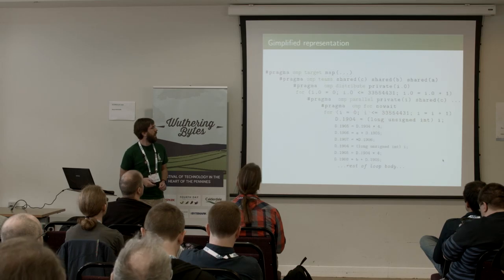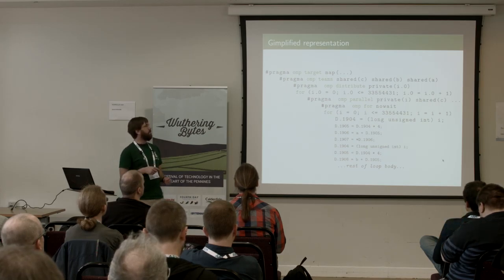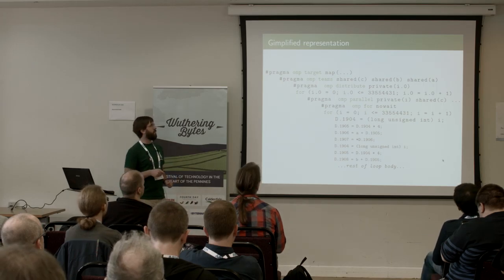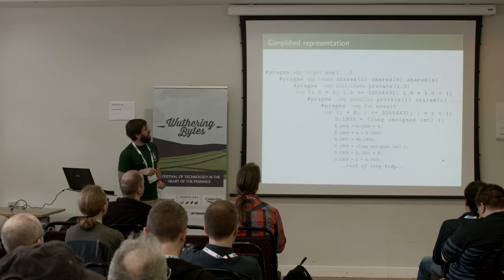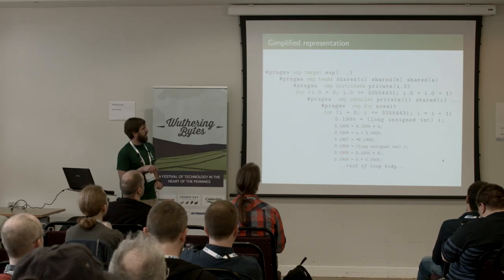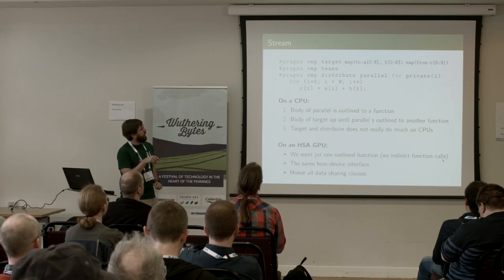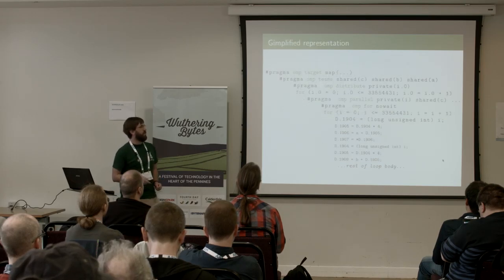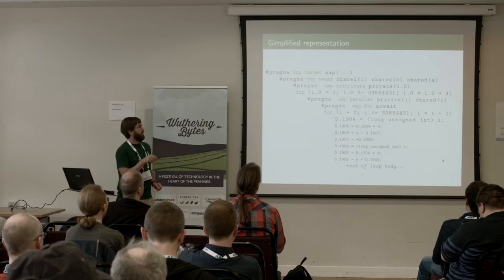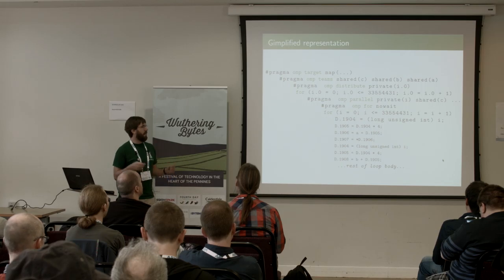We start with the Gimplified representation of that same loop, where all the different constructs are actually decoupled — we have a target construct, teams construct, and so on as Gimpl statements, then distribute, parallel for, and the body. Even though the original source code had one loop, because of the distribute and for constructs, that loop is sort of duplicated in the Gimplified form, and lowering and expansion takes care of that. I needed to expand this code differently.